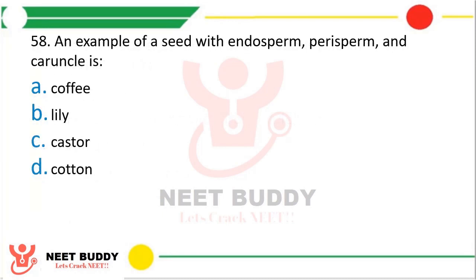Question number 58: An example of a seed with endosperm, perisperm, and caruncle is — coffee, lily, castor, or cotton. The correct answer is Option C, i.e., castor.